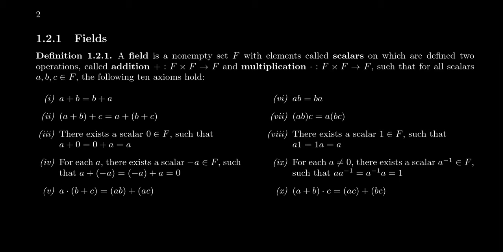The main idea for Section 1.2 is the idea of a field. A field, first of all, is a non-empty set — that means there's something inside of this set F. It contains a bunch of elements. It could be a finite set or it could be infinite, depending on the type of numbers we have in play. When one describes a field, the elements of a field are typically called scalars, in contrast to a vector quantity, which we'll talk more about in Section 1.3. So a field is a set that contains numbers, which we call scalars.